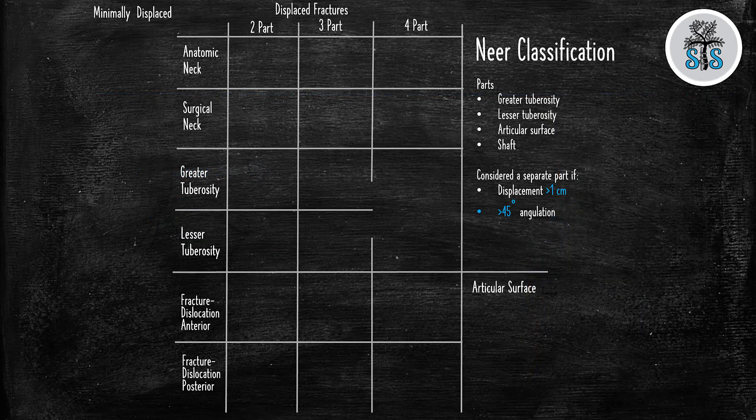Now, the all-important classification system, the Neer classification, is based on the number of parts of the fracture. There's the greater tuberosity, lesser tuberosity, articular surface, and the shaft. You only consider a part if it is either more than one centimeter displaced, or if it's greater than 45 degrees angulated. So let's go through this.